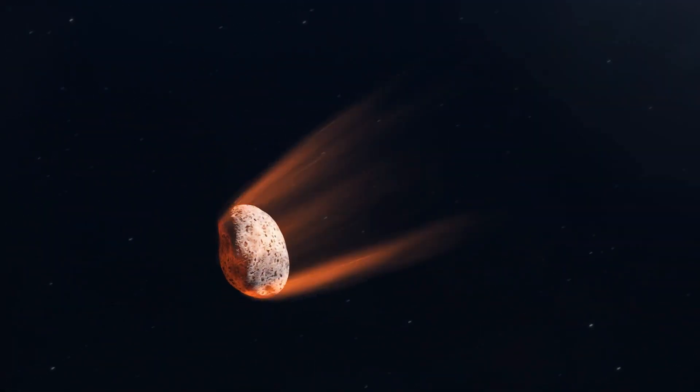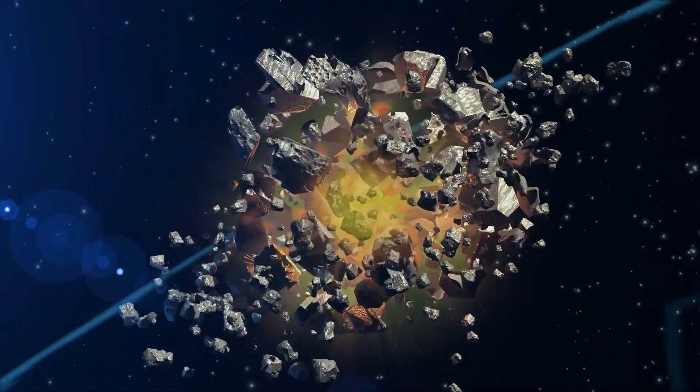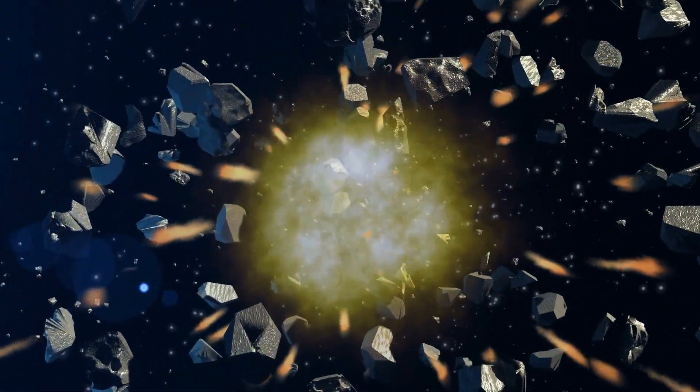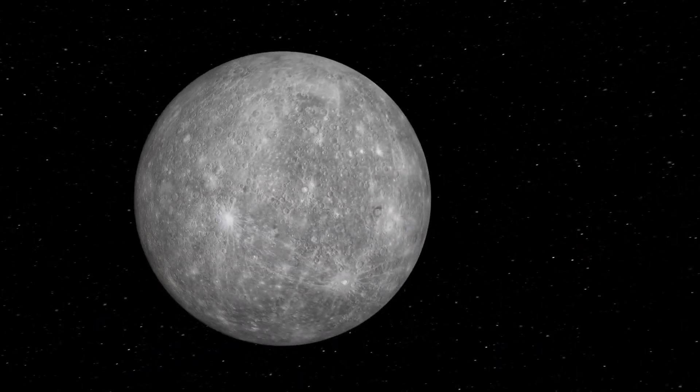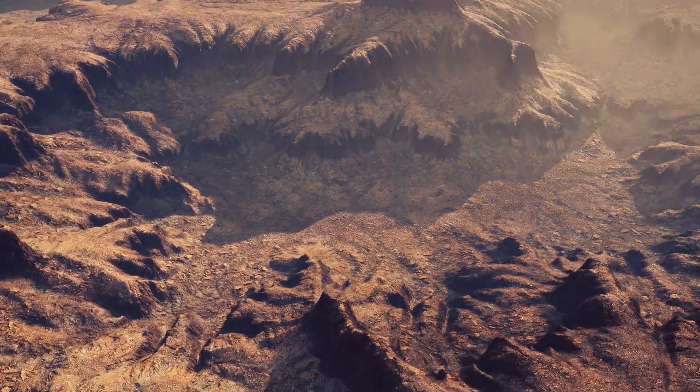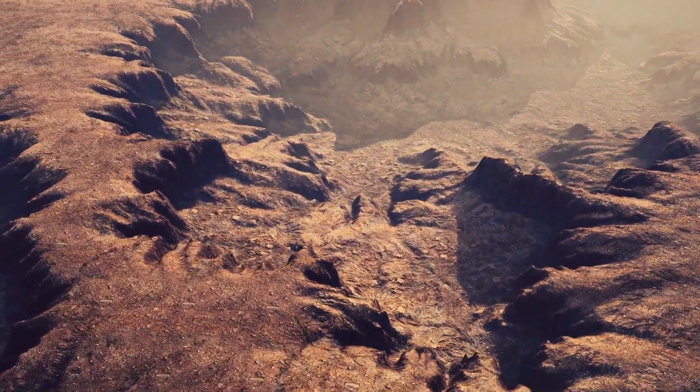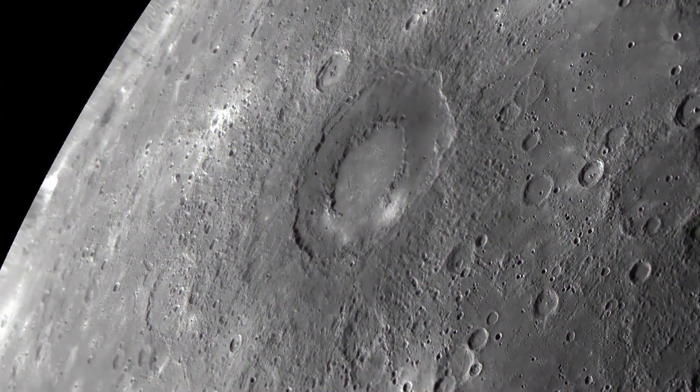The formation of these craters is a fascinating process. When a space rock, like an asteroid or meteorite, collides with Mercury, it creates an impact crater. What's astonishing is the lack of erosion on Mercury. Unlike Earth, where wind, water, and geological processes can gradually erase craters, Mercury's vacuum-like environment preserves these scars for eons.